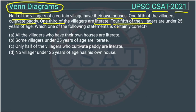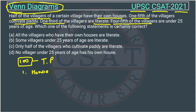Let's suppose the total number of people in the village is 100. The first statement says half of the villagers have their own house, so that is 50 people.